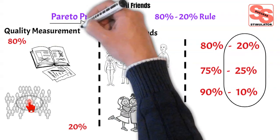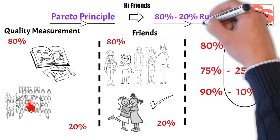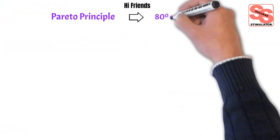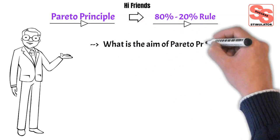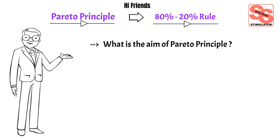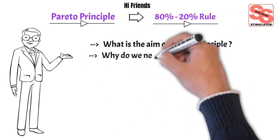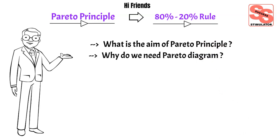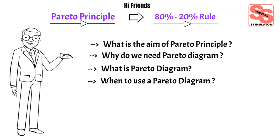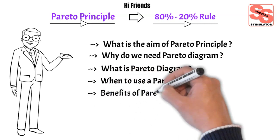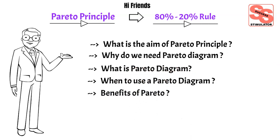This is a very broad classification of Pareto Principles. Now we'll get into the details. We are going to discuss the following points: What is the aim of Pareto Principles? Why do we need a Pareto diagram? What is a Pareto diagram? When to use a Pareto diagram? And the last one is: Benefits of Pareto?